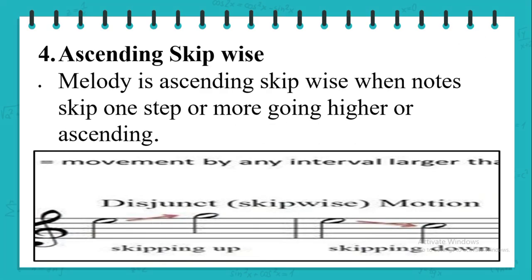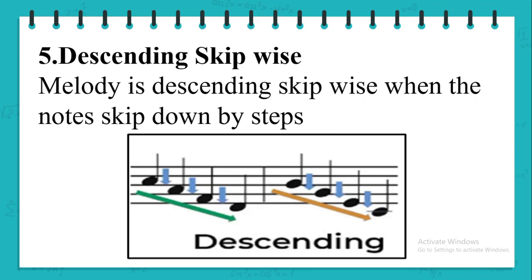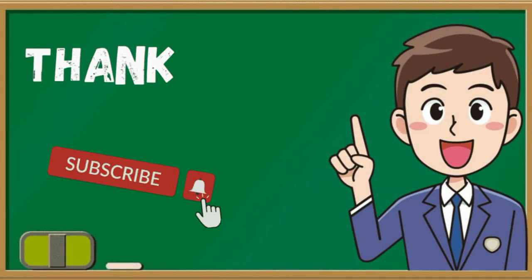4. Ascending skipwise: melody is ascending skipwise when notes skip one step or more going higher or ascending. 5. Descending skipwise: melody is descending skipwise when the notes skip down by steps.